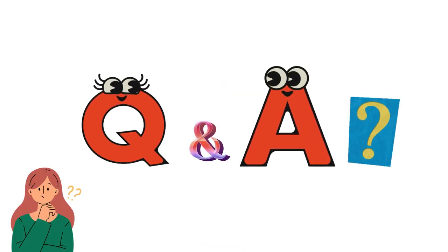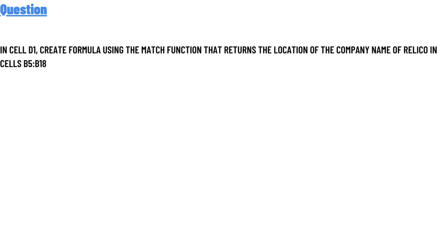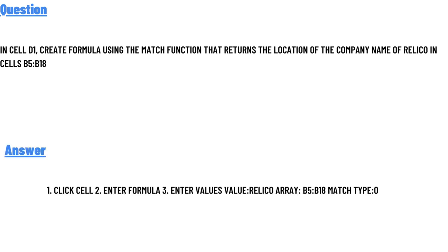Today's question is: in cell D1, create a formula using the MATCH function that returns the location of the company name 'RELICO' in cells B5:B18. The correct answer involves clicking cell D1 and entering a formula.